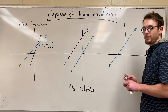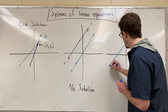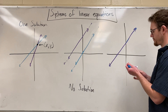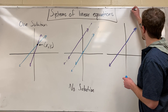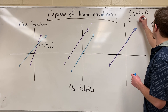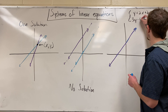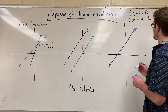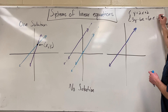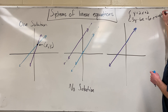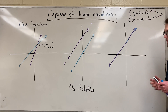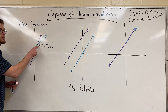Now the other one is sometimes difficult for students to understand because they only see one line. Despite this being a system, let's say y equals 2x plus 2, and maybe 3y minus 6x equals 6 — these are actually the same exact equation. If I was to simplify that and put it into slope-intercept form, I would get the same line.